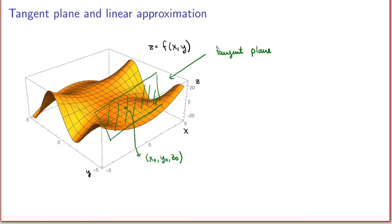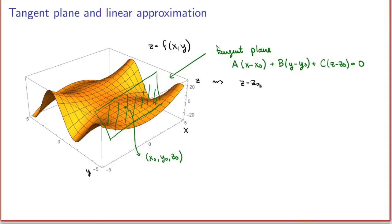What we're trying to do now is find the equation of the tangent plane to the surface at a point. A plane is given by a linear equation in three variables x, y, z, so in general it will have an equation of the form: a times (x minus x₀) plus b times (y minus y₀) plus c times (z minus z₀) equals 0, for some constants a, b, c. Let me rewrite this by solving for z and redefining new constants a and b — then I want to solve for a and b in terms of the function.